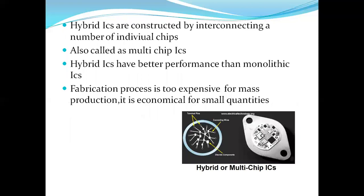Next, hybrid ICs: in hybrid ICs the components and chips are interconnected together, which is why these ICs are also called multi-chip ICs. Hybrid ICs have better performance compared to monolithic ICs, but the fabrication process is too expensive for mass production. Therefore it is economical only for small quantities.